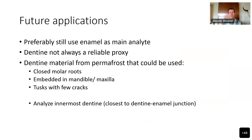For future applications, it is still very much preferable to use enamel as your main analyte to answer whether an animal or human migrated or was local. On the other hand, this also means dentine may not always be a reliable proxy to determine the local strontium ratio, because it can preserve authentic strontium isotope ratios. If you do want to use dentine from permafrost to answer your main research questions, try to select teeth with closed molar roots so that little strontium and soil can enter — preferably while still embedded in mandibles or maxillae, though it's hard to assess whether roots are closed when teeth are still embedded in bone.